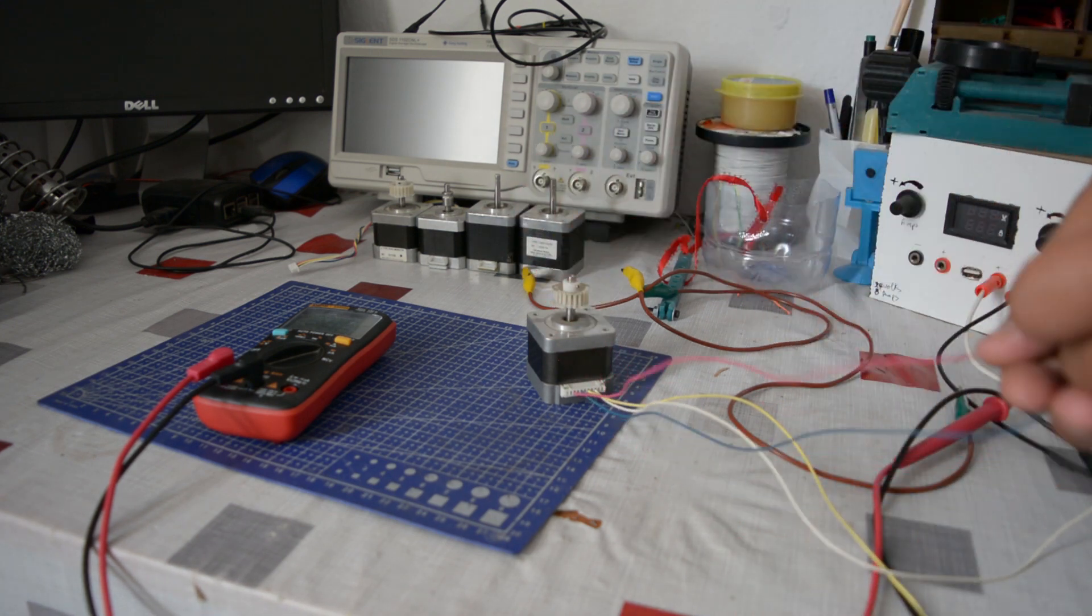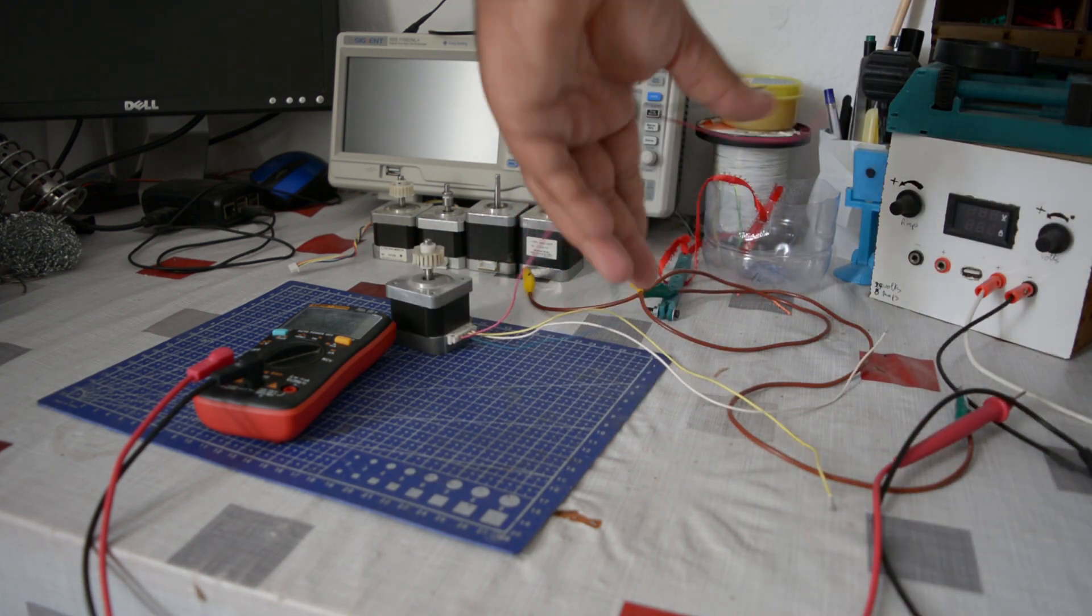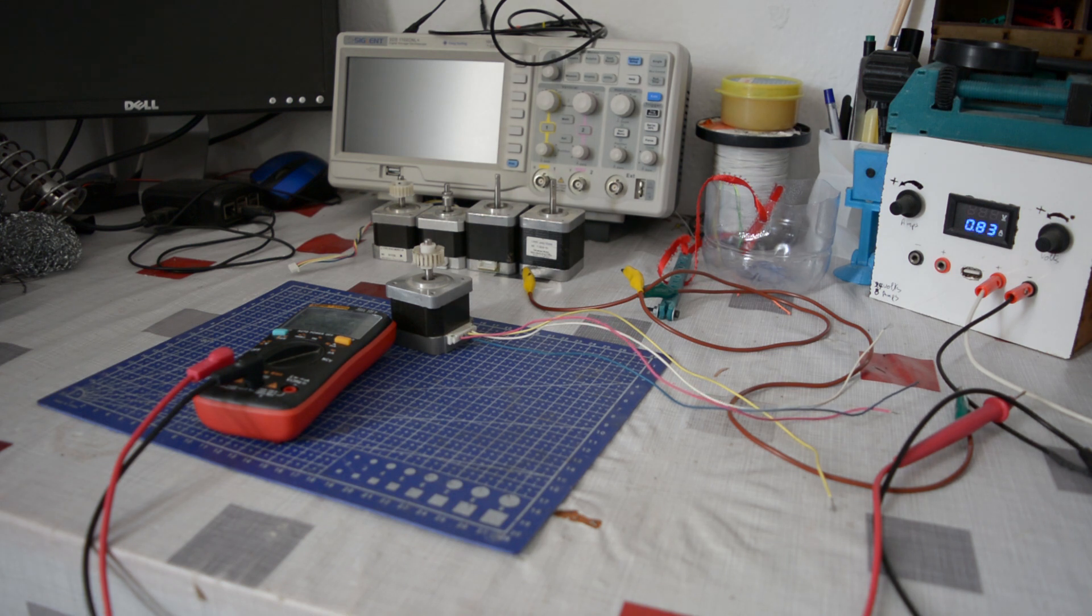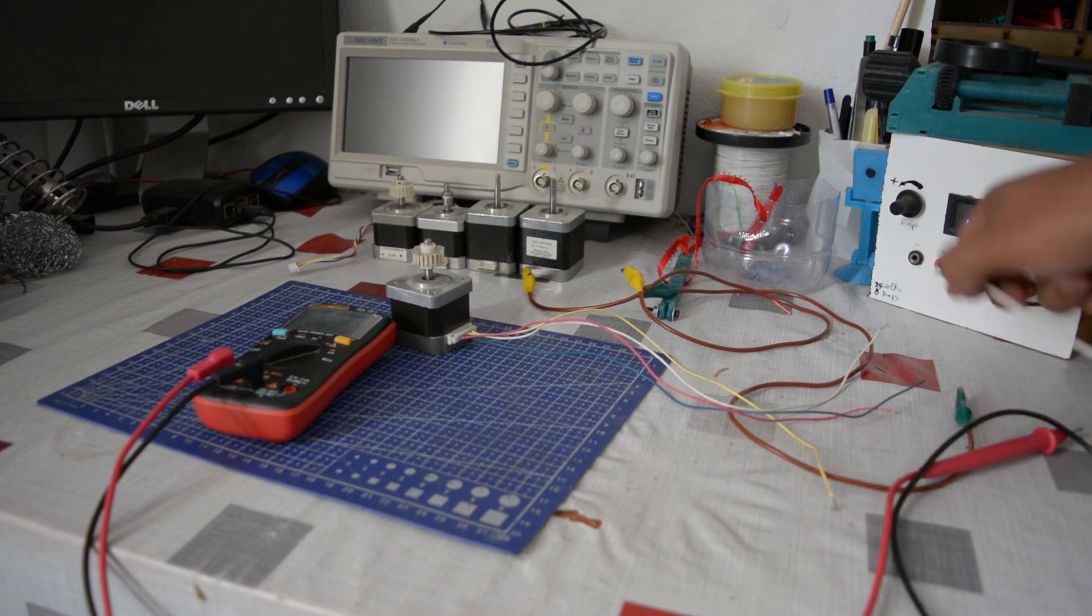For that it's pretty simple. Take 2 wires, doesn't matter what the color is, and tie them together and try to turn the motor. If you feel the resistance, it means that those wires connect to the same coil.